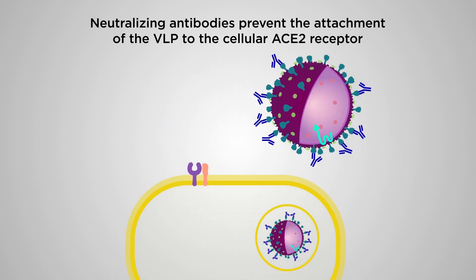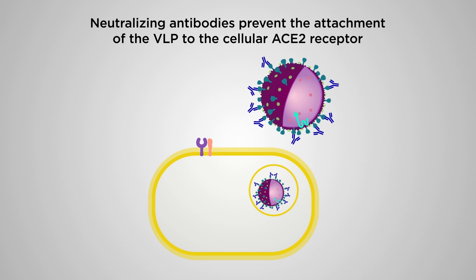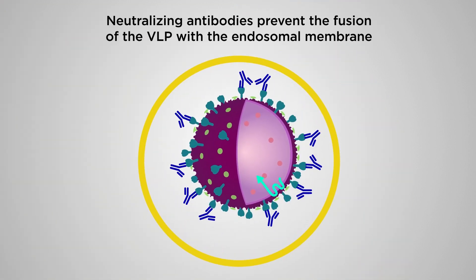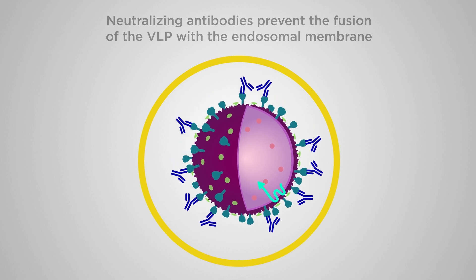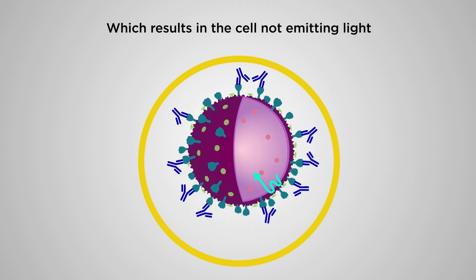Additionally, the antibodies also prevent the fusion of the VLP with the endosomal membrane, thus preventing the enzymatic process, resulting in the cell not emitting light.